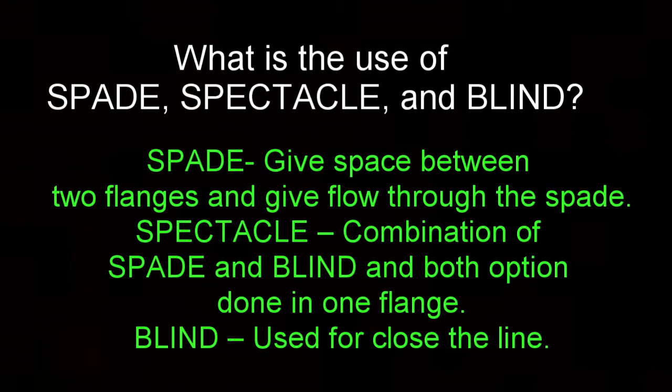What is the use of spade, spectacle, and blind? A spade gives space between two flanges and allows flow through the spade. A spectacle is a combination of spade and blind in both options, done in one flange. A blind is used to close the line.